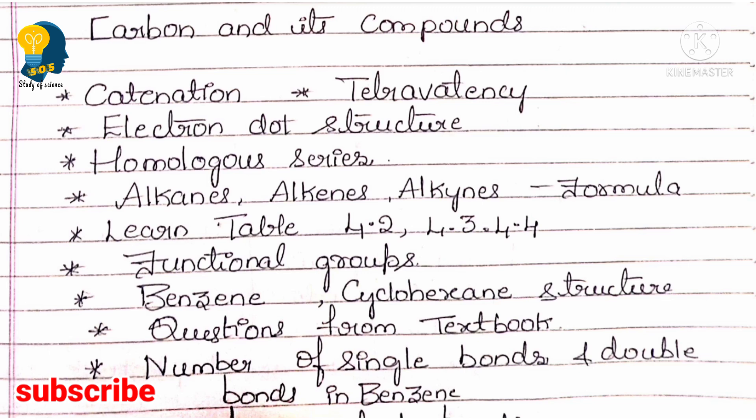Learn all the functional groups: alcohol, aldehyde, carboxylic acid, and ketone. For each, you should know the molecular formula, structural formula, and electron dot structural formula. If you are new to my channel, please watch the crash course or the one-shot video for Carbon and Its Compounds. Also refer to the textbook questions covering the first half of the lesson, up to functional groups.